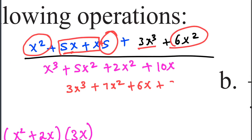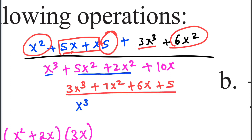Five x squared plus two x squared gives seven x squared, plus ten x. This is the result.